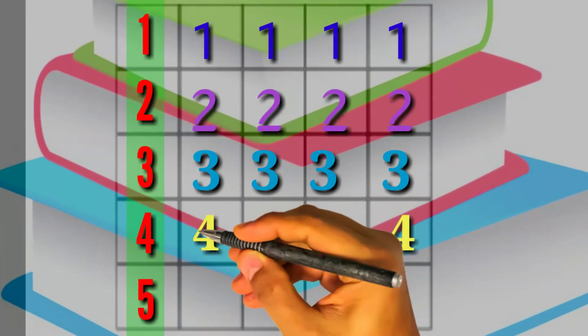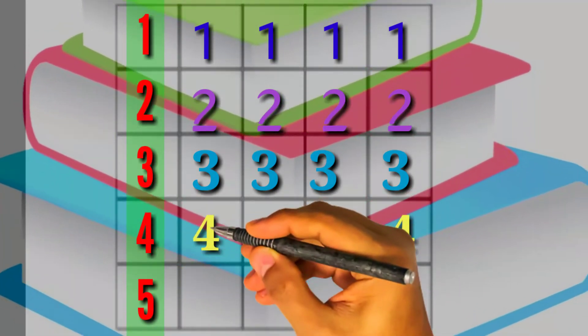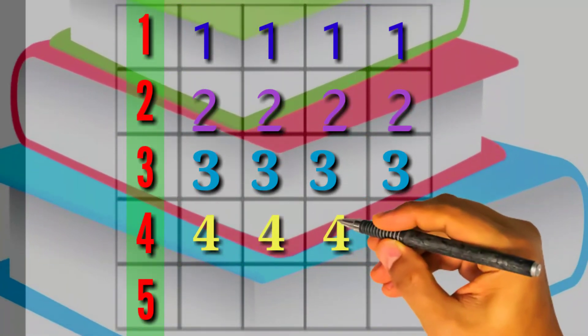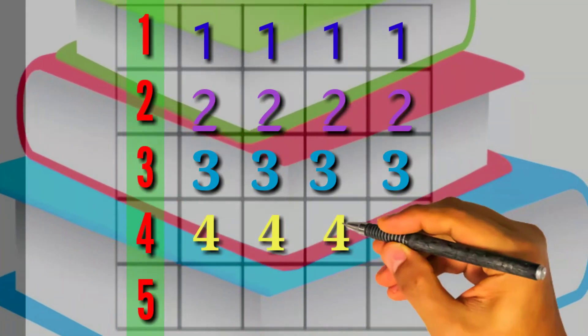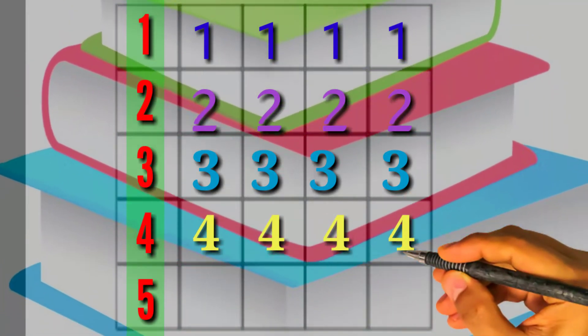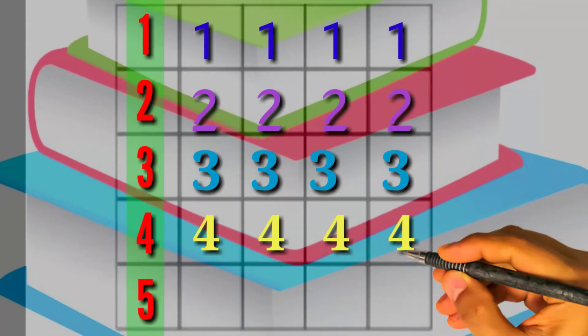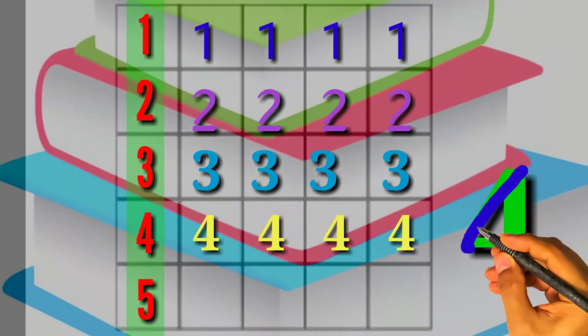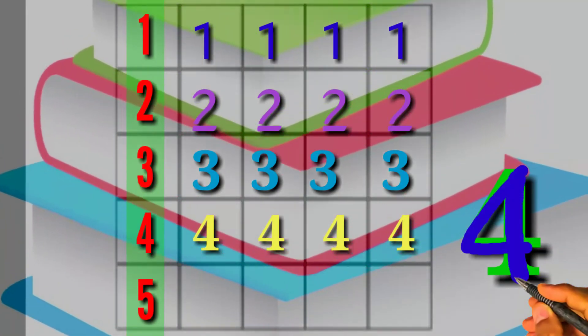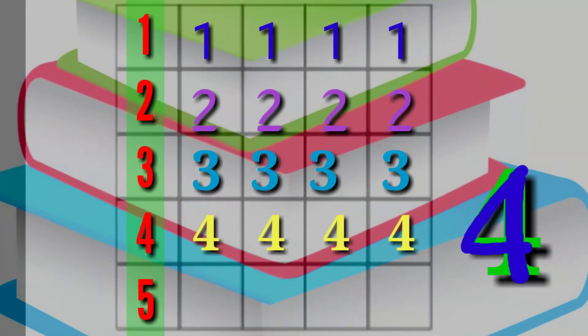Number 4. Cross line, slipping line, and standing line up to down. Look at again, cross line, slipping line, up to down, single line, single line.